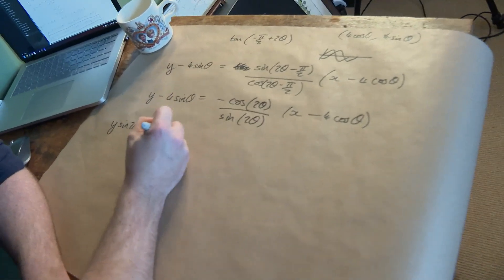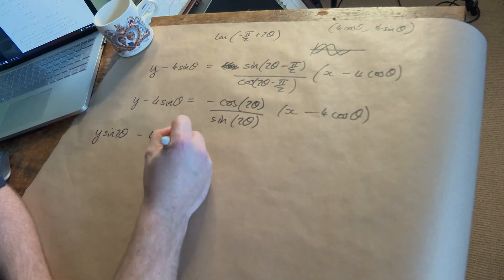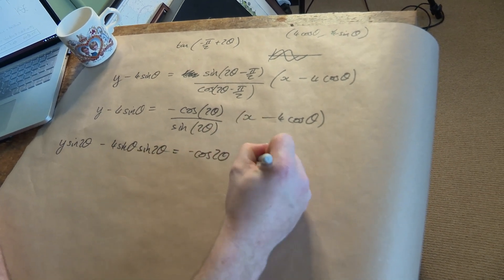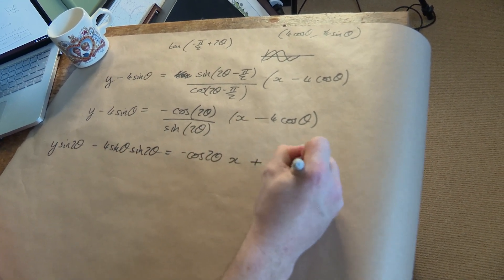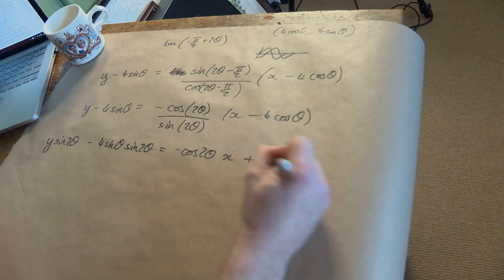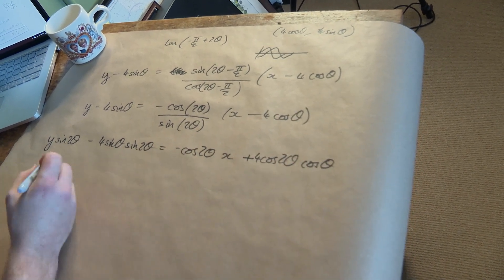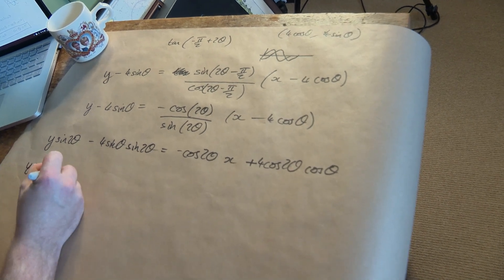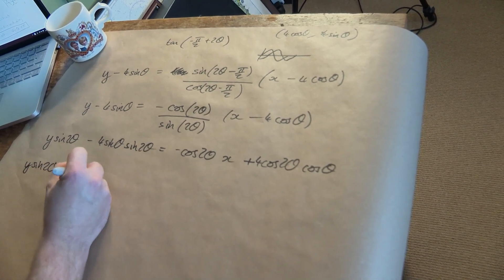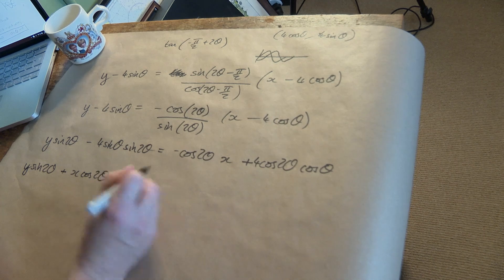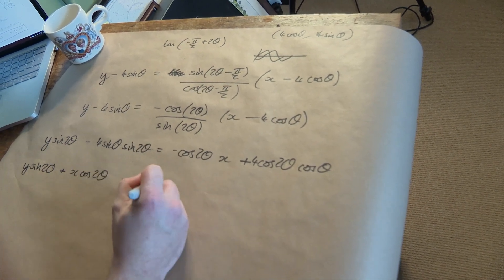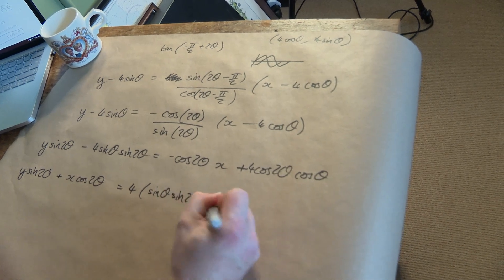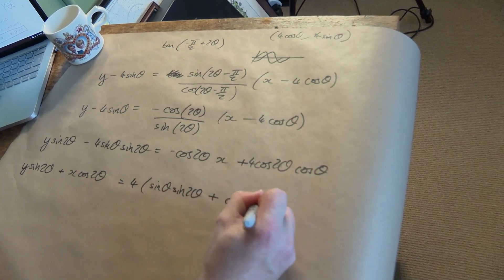I'm gonna get 4 sine theta sine 2 theta equals negative cosine 2 theta times x plus cosine 2 theta, the 4 and the cos theta. Yuck, but we're almost there. Get the x term over here, I've got y sine 2 theta as before, I've got plus x cosine 2 theta, and on the right hand side I've got 4, this term, sine theta sine 2 theta plus cos 2 theta cos theta.